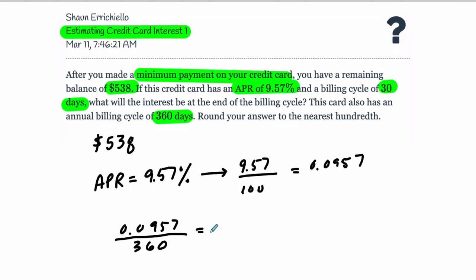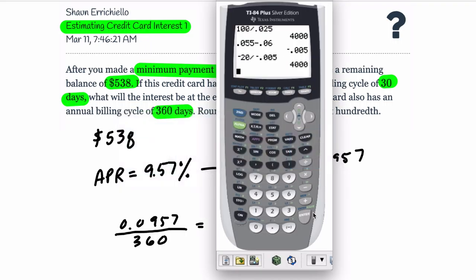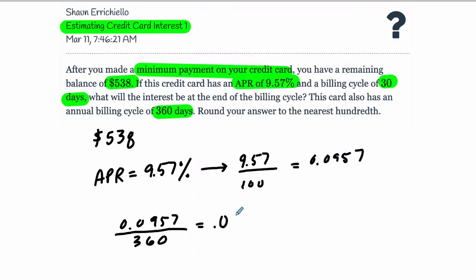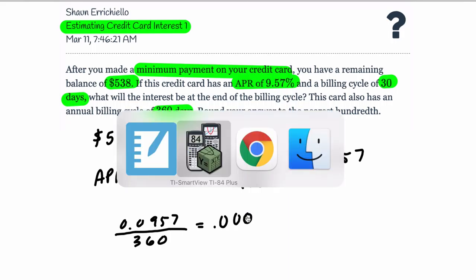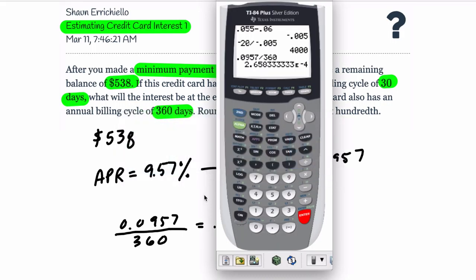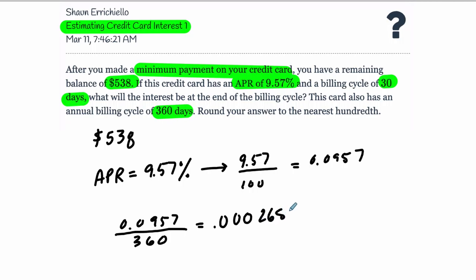This number will be our daily periodic rate. That's what we're basically paying per day. Let's find out what that is. In this case, 0.0957 divided by 360 gets you a really small number: 2.6583333 times 10 to the negative fourth. That means it's 0.00026583 repeating. So this is our daily interest rate, the little bit of interest that we're accumulating on this credit card every single day.